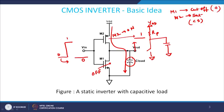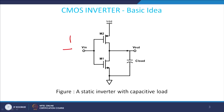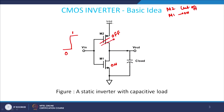Now let us suppose the input goes from 0 to 1. As it goes to 1, the reverse happens: M1 goes to the on state and M2 goes to an off state. So M2 is now in cut-off and M1 is in the on/saturation state. There is no direct connection between VDD and Vout. The charge accumulated at CL finds a low-resistance path through M1 to ground, so Vout goes to 0.